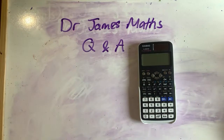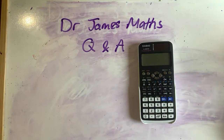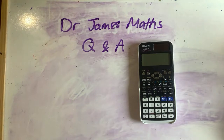Do we need to show how we got the continuity approximation, or can we just write it out if we know it? I would always show it if you can. If you just know it, then ultimately you'll get the majority, if not all the marks. But always show your working if you can.